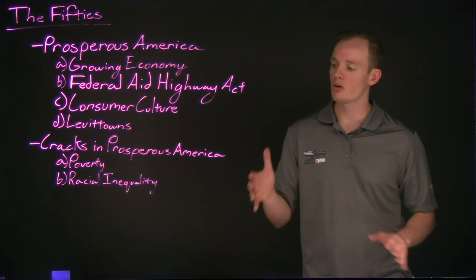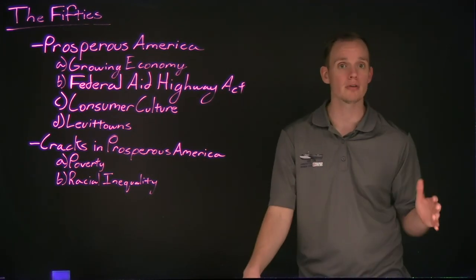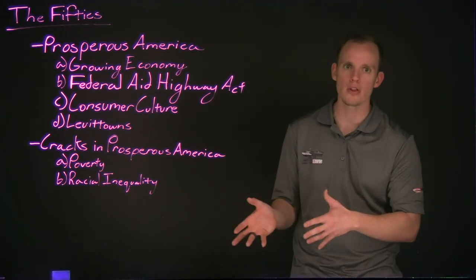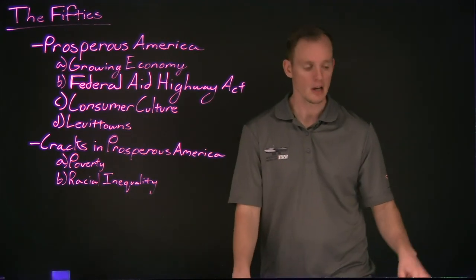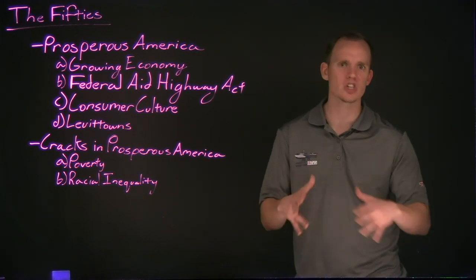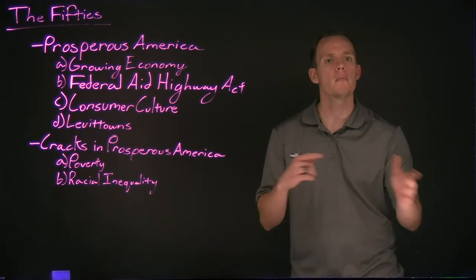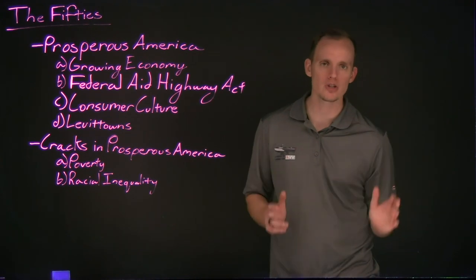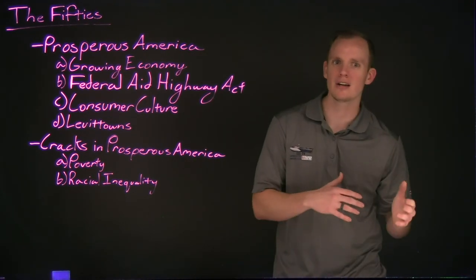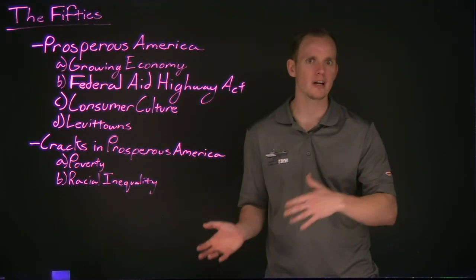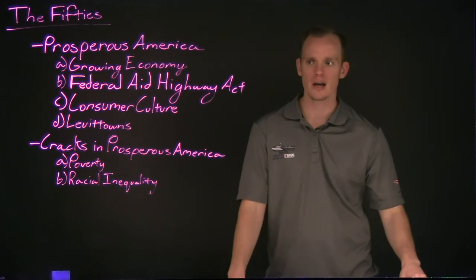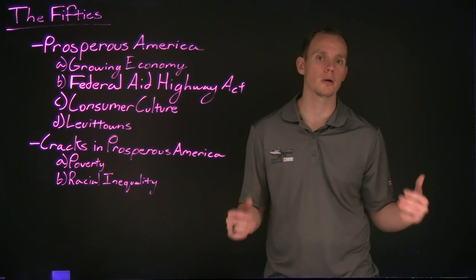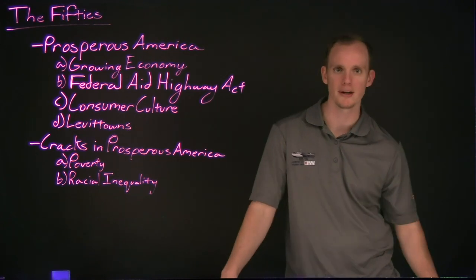On top of that, the issue of racial inequality was still prevalent across the nation. Remember the Jim Crow laws within the South — they were still in place. Civil rights, while it was beginning to take shape, by the 1950s it still hadn't really come to fruition. Not to mention, we also see that in the Southwestern United States as well as on the West Coast, Asian American groups as well as Hispanic American groups are also being racially oppressed during this period.